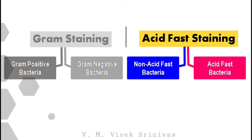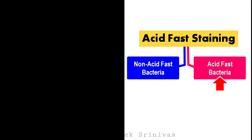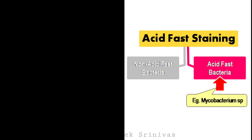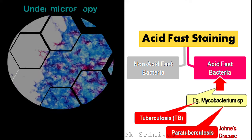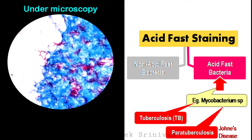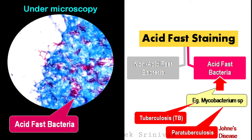On acid-fast staining, our interest is to identify the acid-fast bacteria. A very good example of an acid-fast bacteria is Mycobacterium species, which is the causative agent of tuberculosis (TB) in humans and animals, and the causative agent of paratuberculosis in animals. So after acid-fast staining on microscopic examination, if you are able to find organisms stained pink, then they are the acid-fast bacteria.